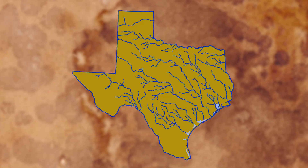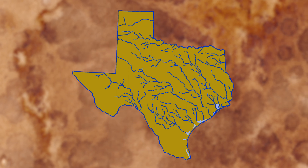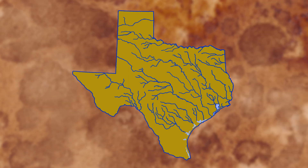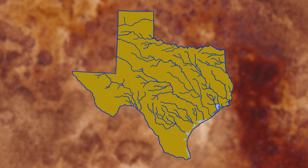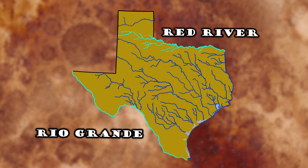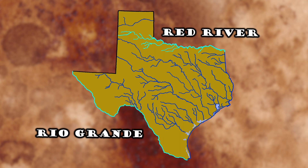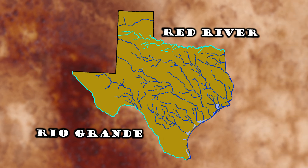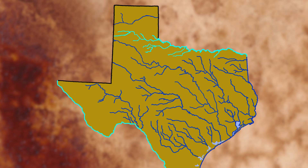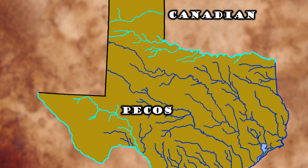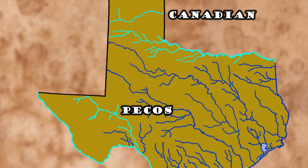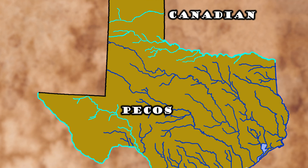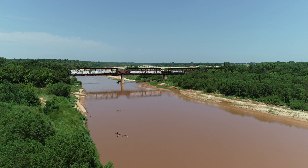This map shows the journey. We're going to start with the rivers that form boundaries, the Red River and Rio Grande. Then, the rivers that are just passing through, the Canadian and Pecos.